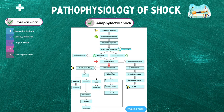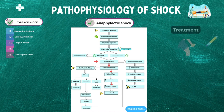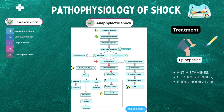The release of these inflammatory mediators causes a systemic inflammatory response, leading to the symptoms of anaphylactic shock. The vasodilation and increased vascular permeability can cause a rapid drop in blood pressure, leading to hypotension and shock. In severe cases, this can result in organ failure and death. Treatment involves the administration of epinephrine, a potent vasoconstrictor that can counteract the vasodilation and increase blood pressure. Antihistamines, corticosteroids, and bronchodilators may also be used to alleviate symptoms.